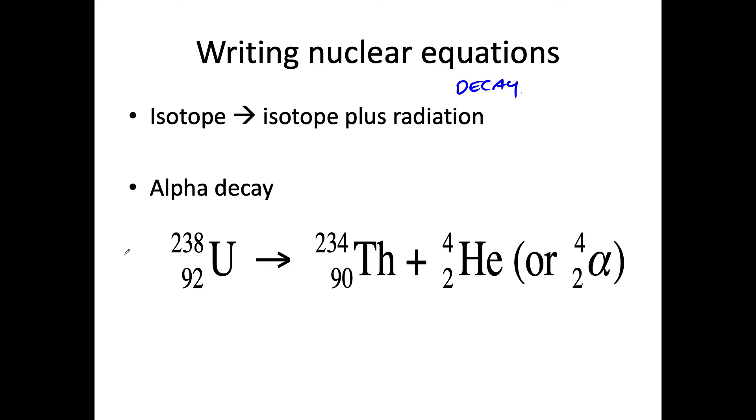So alpha decay. Mass on the left is 238. Protons on the left is 92. On the right, 234 plus 4 equals 238. That's correct. 90 plus 2 equals 92. Everything is balanced.